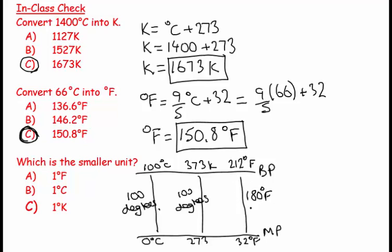But the same temperature difference is divided into 180 steps for Fahrenheit. The more steps you have, the smaller each step is. So degrees Fahrenheit is the smaller unit—there's 180 of them between freezing and boiling point, whereas for degree Celsius and the Kelvin scale, there's only 100.